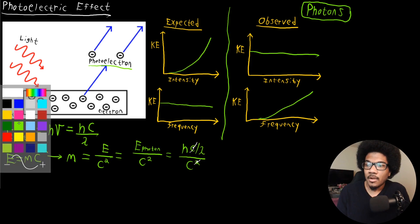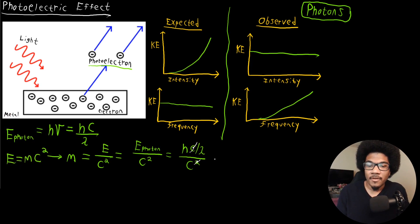So we end up with the following final expression where we have the mass is going to be equal to Planck's constant over the wavelength times the speed of light. So this is the mass of a photon.